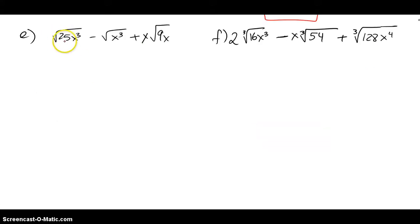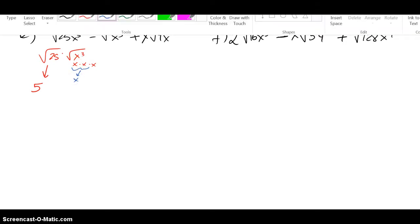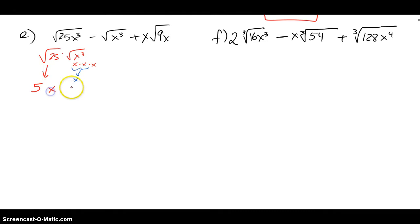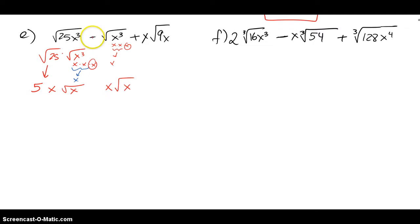Now I have square root of 25 times square root of x³. I split those: √25 pops out a 5. For x³, there are three x's, so one x escapes and comes out front — so an x comes out and an x is stuck inside the radical. The next term is the same idea: I have x³, one x comes out, and one x stays stuck, with a minus sign in between.